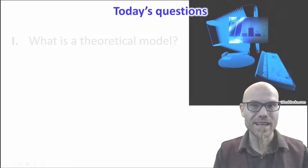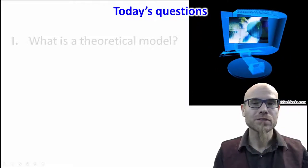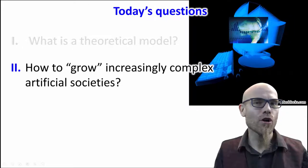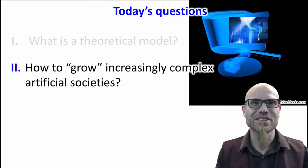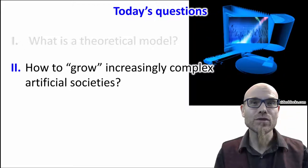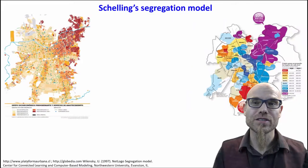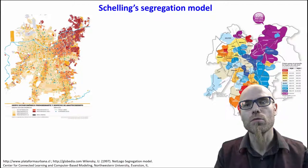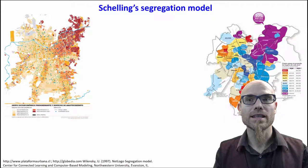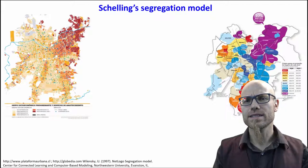That's what I wanted to say about what is a theoretical model — we are done with our first question. Now we go to a more practical part: exploring and playing around. It's just as much fun as playing SimCity. The question is: how to grow increasingly complex artificial societies? I want to start with a model which is very well known — Schelling's segregation model.